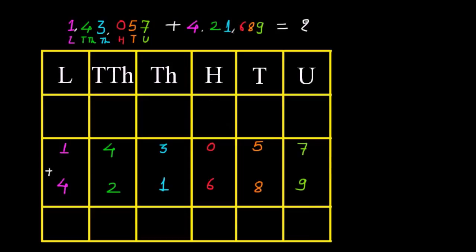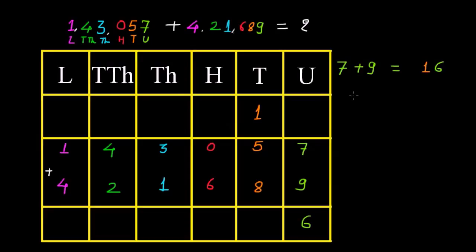Now let us start with the unit place. We have 7 plus 9 is equal to 16. So I will write 6 at the unit place in the answer. We must write the carried 1 in a different color for the tens place. Now we carry this 1 to the tens place. In the next step we have to add this 1 plus 5 plus 8, which gives 14.